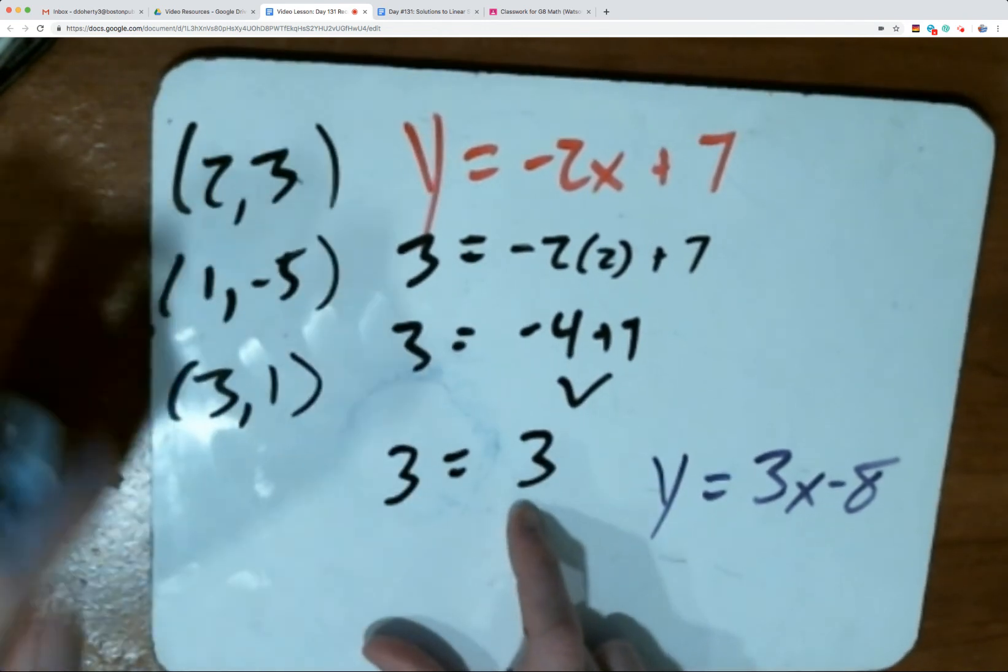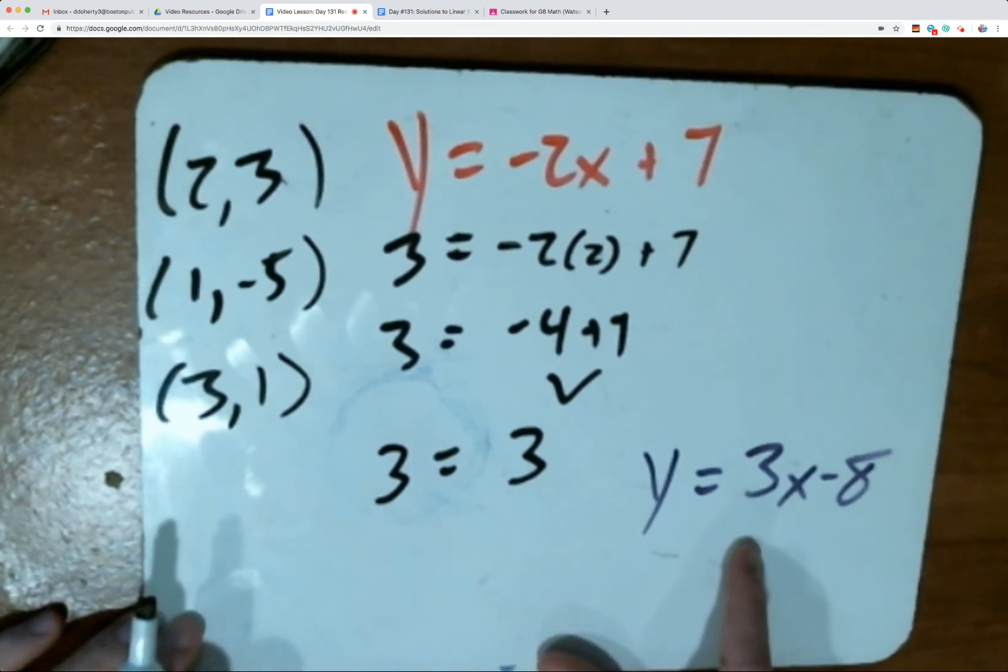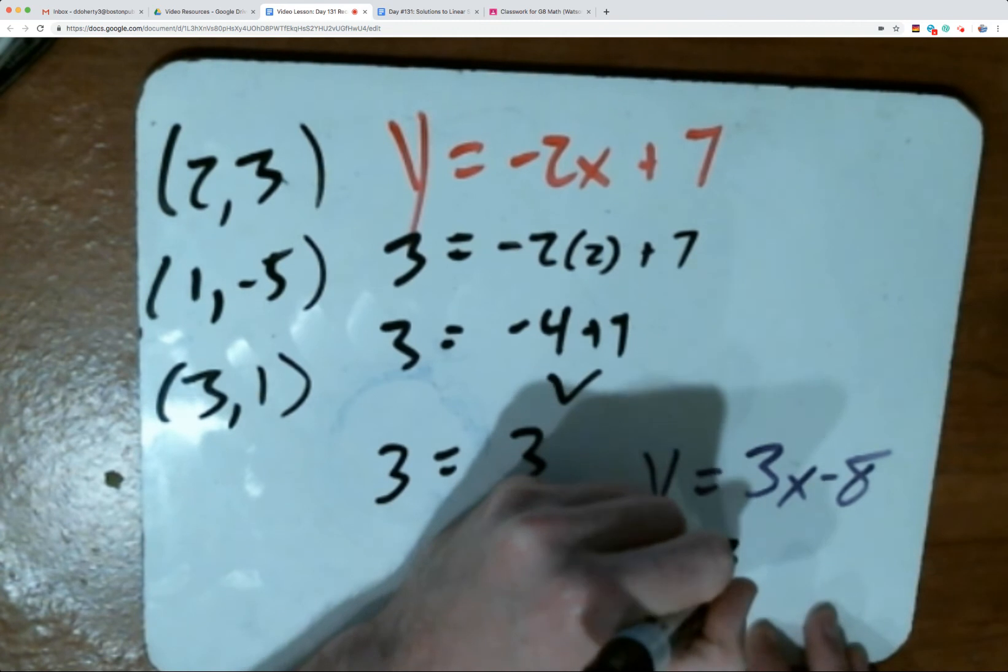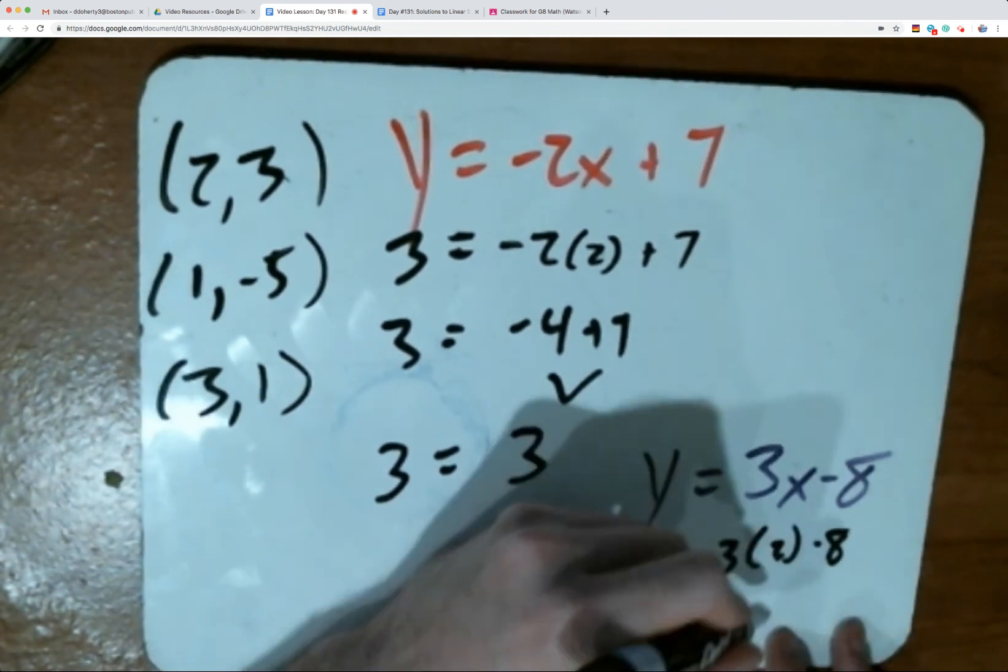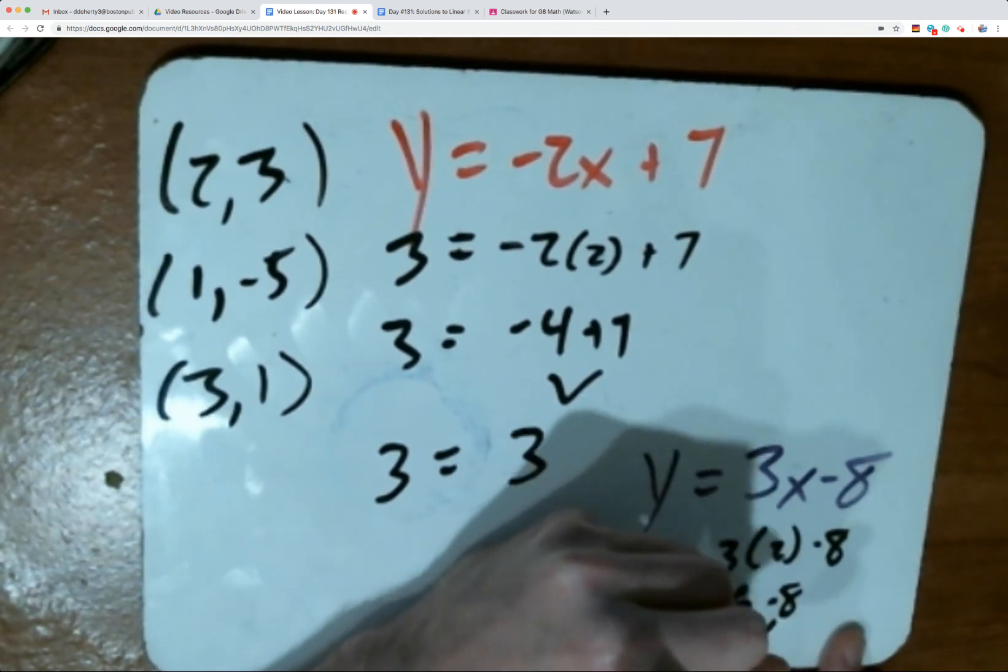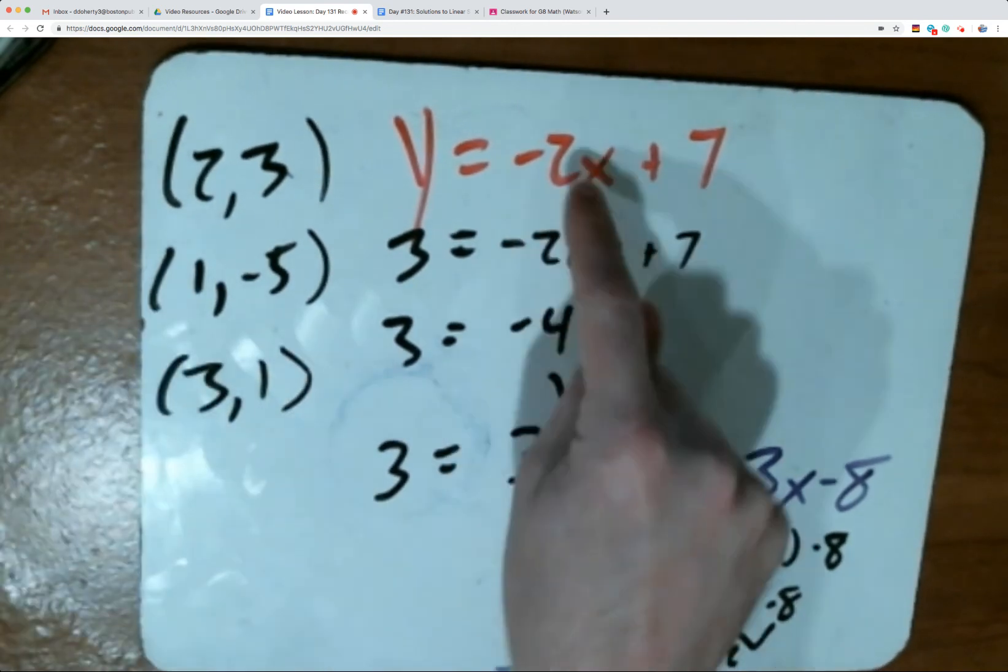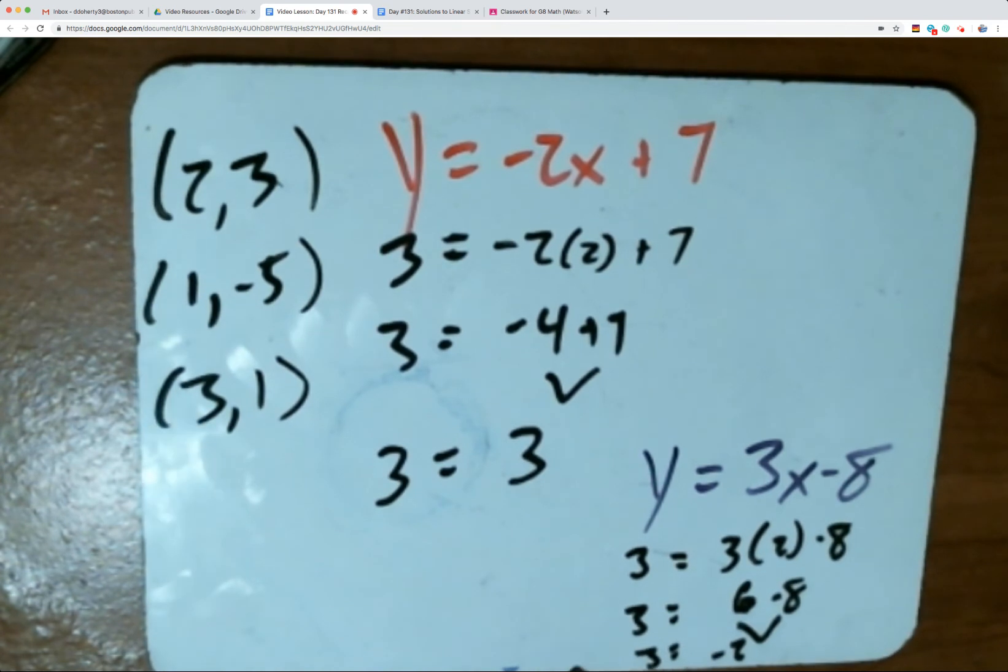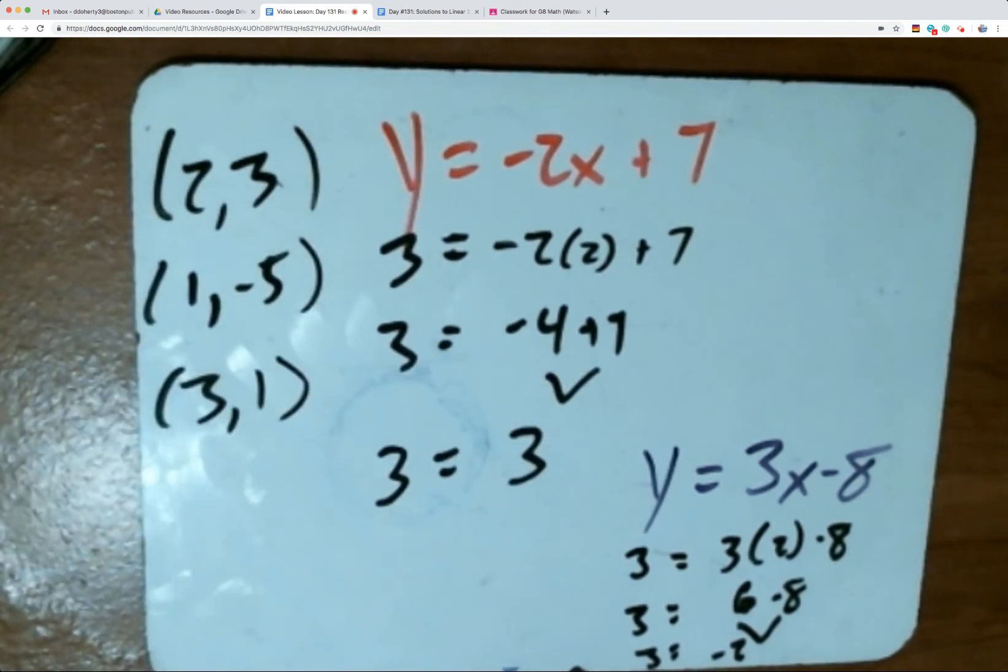So we see at least for answer choice A, it works in the first equation, the red one, and we need to see does it work in the blue equation. So I'm going to replace over here the y with 3, the x with 2. 3 times 2 is 6, so we're left with 6 minus 8, which gives us 6 minus 8 makes negative 2. We see even though answer choice A worked in the red equation, it did not work in the purple equation.